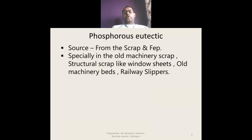Sources for the phosphorus eutectic — phosphorus comes from scrap, especially from old machinery scrap and structural scrap like window sheets.